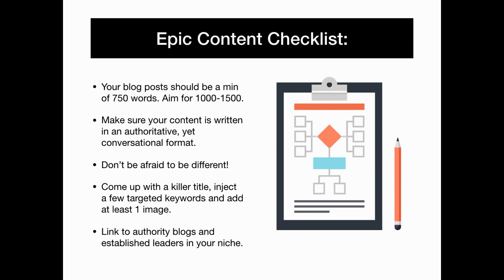Here is your epic content checklist: your blog post should be a minimum of 750 words — aim for 1,000 to 1,500. Make sure your content is written in an authoritative yet conversational format, and don't be afraid to be different. Come up with a killer title, inject a few targeted keywords, and add in at least one image. Then link to authority blogs and established leaders in your niche.